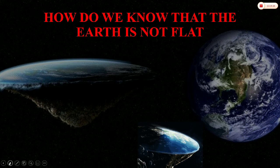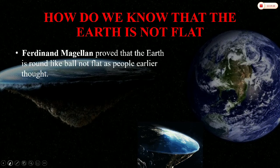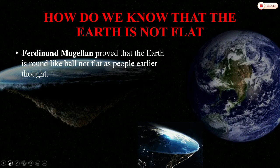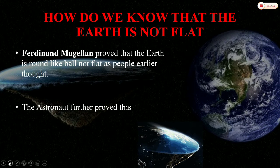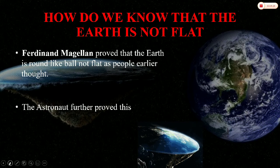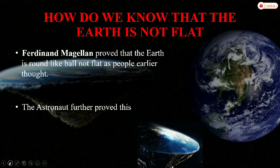How do we know that the Earth is not flat? Ferdinand Magellan proved that the Earth is round like a ball and not flat as people thought earlier. Astronauts also proved the same. Astronauts are people who have been trained to travel in space in rockets and spaceships. When the astronauts looked at the Earth from outer space, they found that it looked like a huge ball.